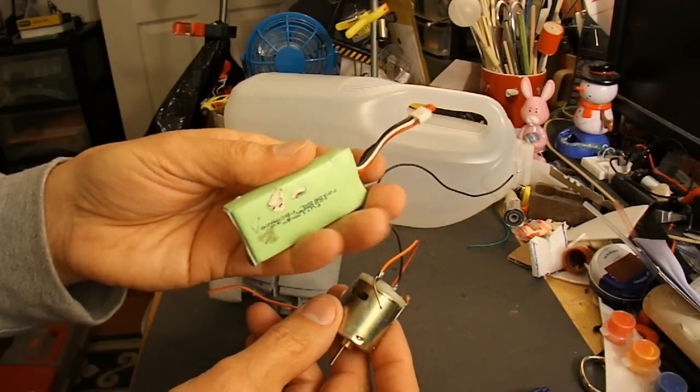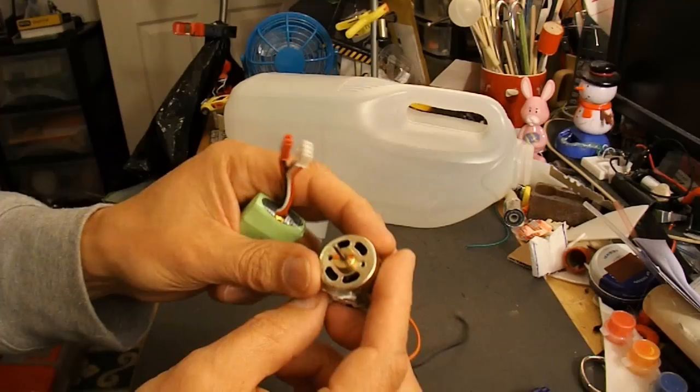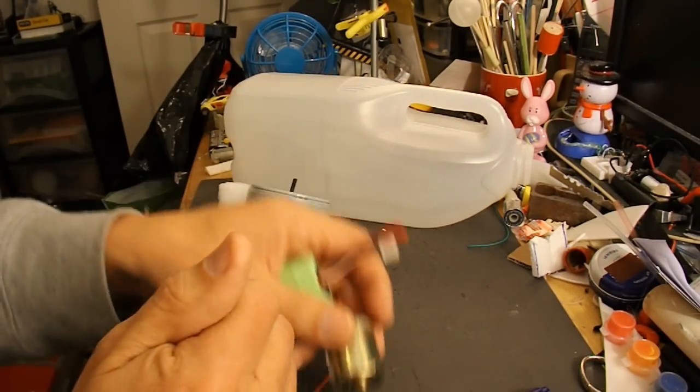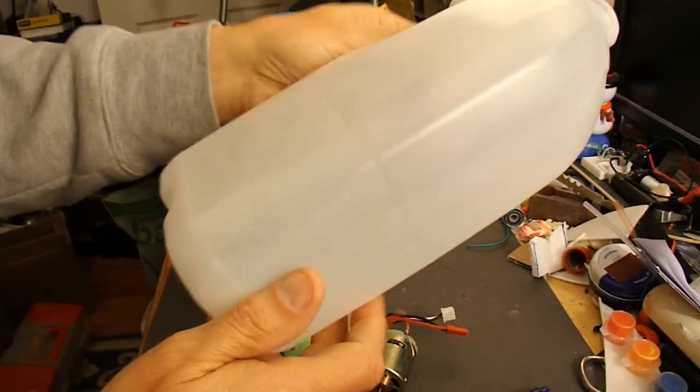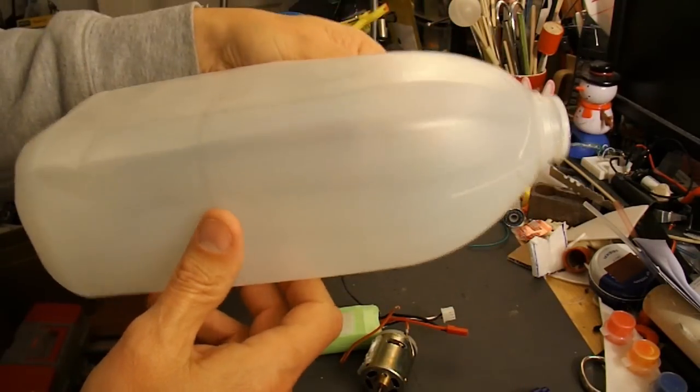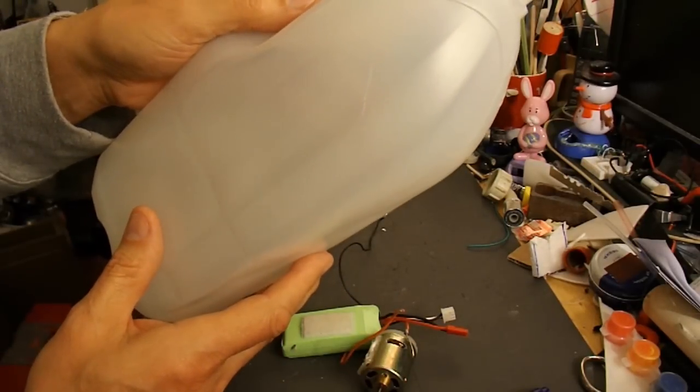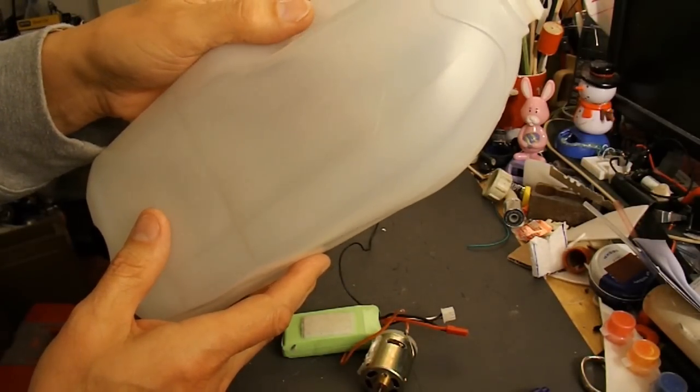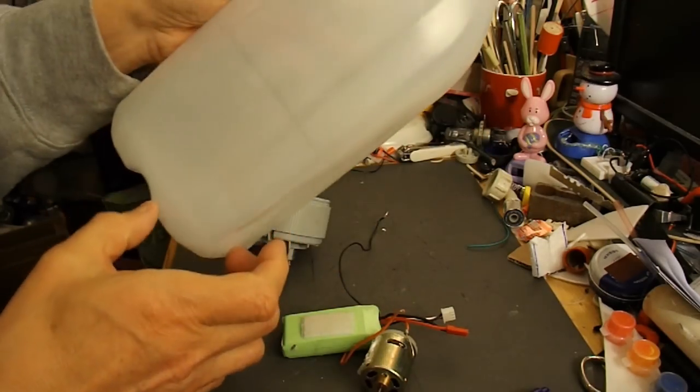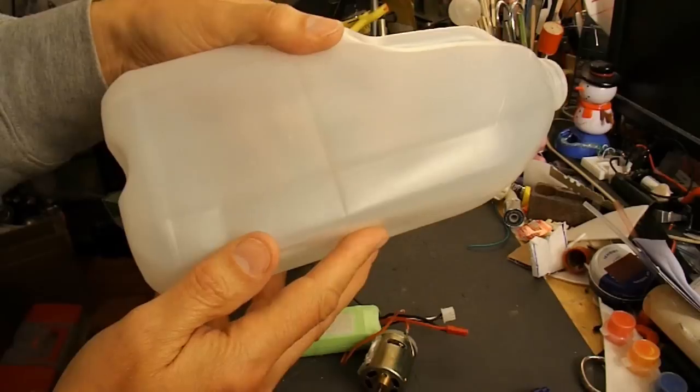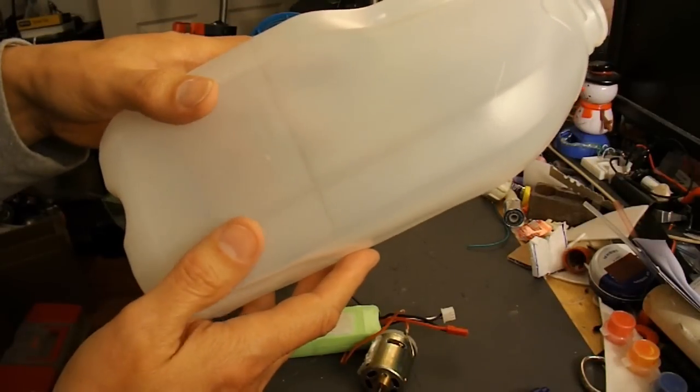I'm going to use a 2-cell LiPo, a hair dryer brushed motor, and a milk bottle carton. Because that gives me the basic boat hull. I shall just cut it along there somewhere. I should probably fill it with polystyrene so that it's unsinkable.